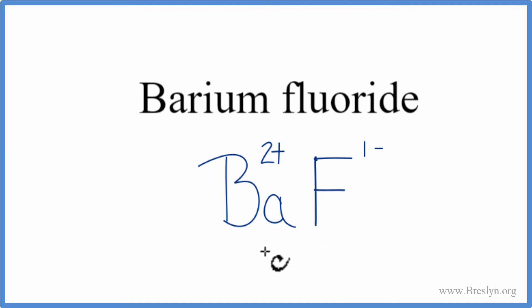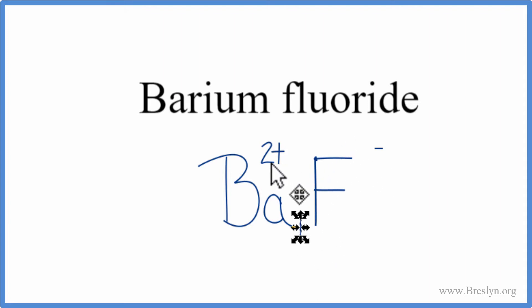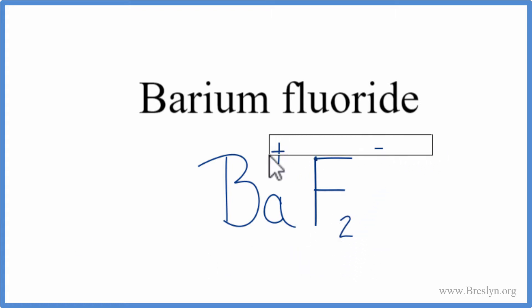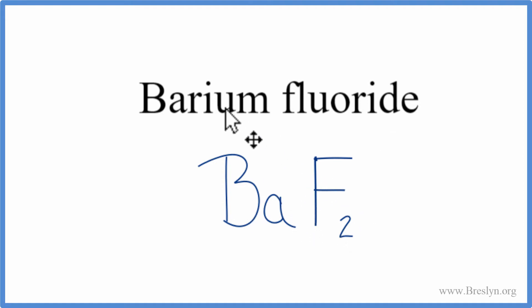There's a way to do that called the crisscross method that makes it quite easy. We take the 1 from fluorine and move it down as a subscript for barium, and the 2 from barium goes over to fluorine. We don't write the 1 by convention, and that gives us the formula for barium fluoride: BaF₂.